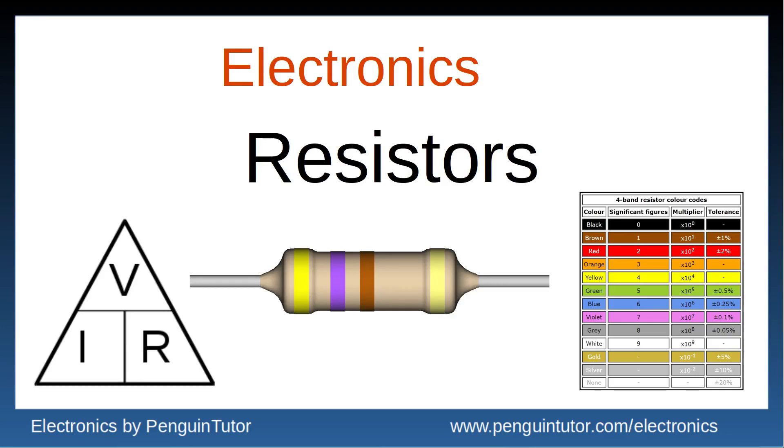This video is going to explain about the resistor, a simple component but without one many circuits would not work. This will look at what a resistor is, examples of where it is used, and how to select an appropriate resistor including the common resistor color code for four band color code.